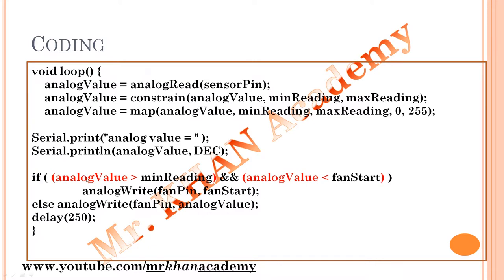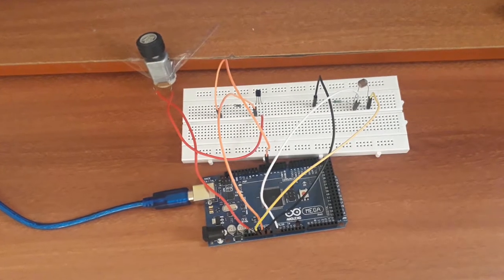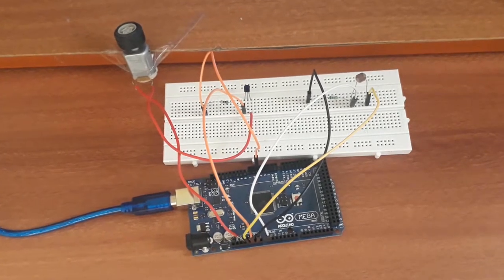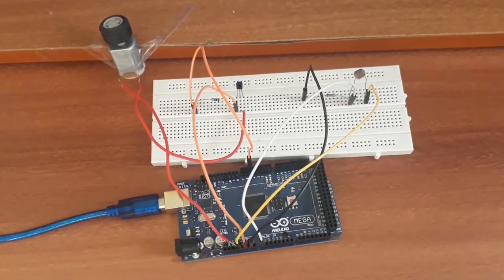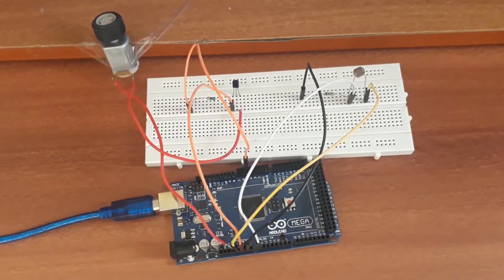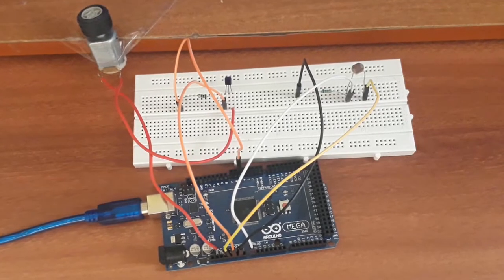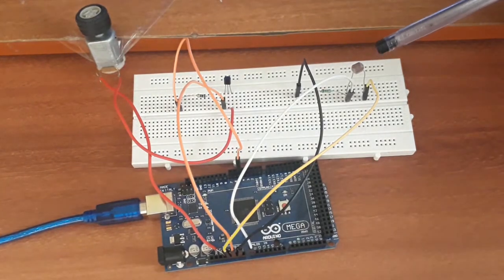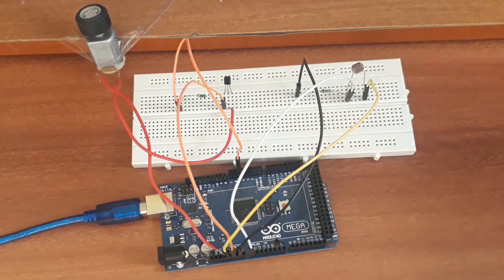This is all about the coding. Now let's see the demonstration — how it works on the Arduino board. I hope you understood the theory, the coding, and the circuit diagram. Now we will see the live demonstration: how we can control the DC motor with the photocell.